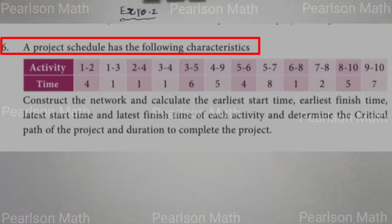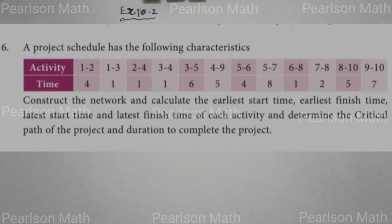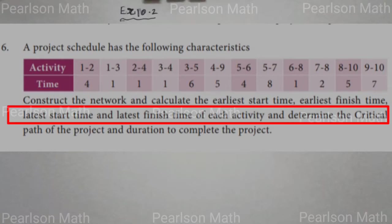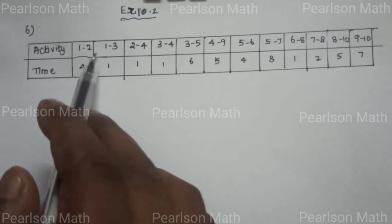Student success 10.2: system a project schedule with the following characteristics. Activity times are given in the data. Construct the network and calculate the earliest start time, earliest finish time, latest start time, and latest finish time of each activity. Determine the critical path of the project and duration to complete the project.